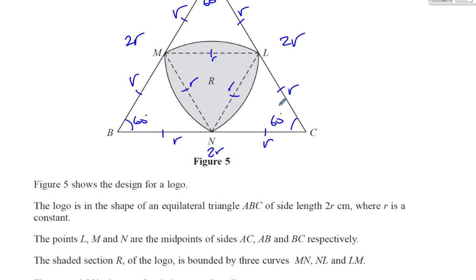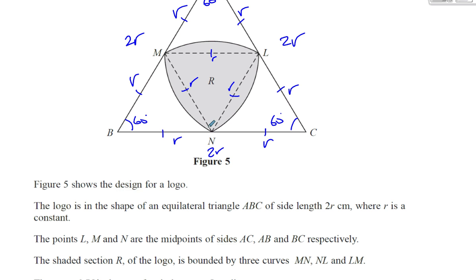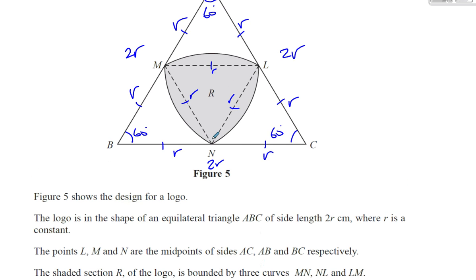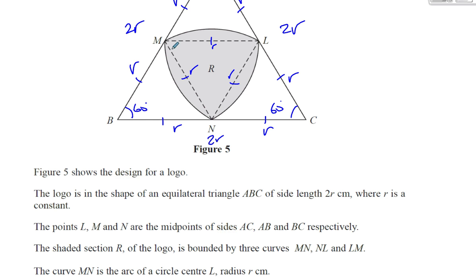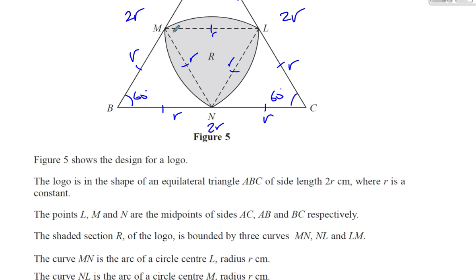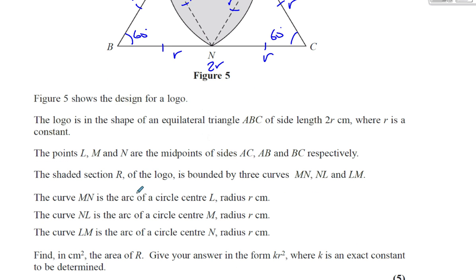The shaded region R of the logo is bounded by the three curves MN, NL, and LM. The curve MN is an arc of a circle with centre L. The curve NL is an arc of a circle with centre M, and LM is an arc of a circle with centre N, all of radius R. Finding the area of R in the form KR squared, where K is an exact constant to be determined.